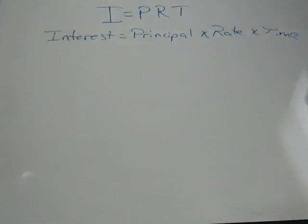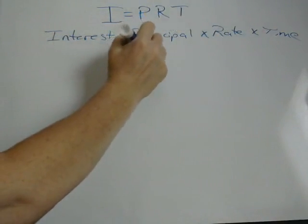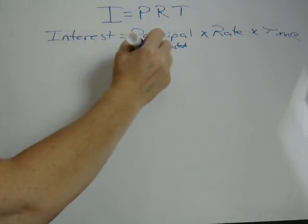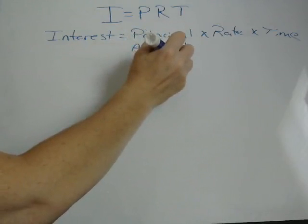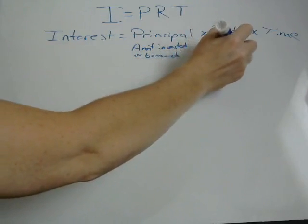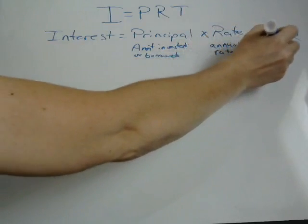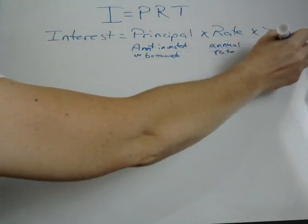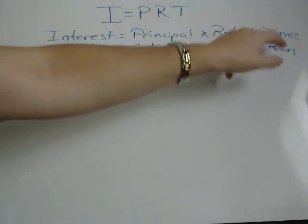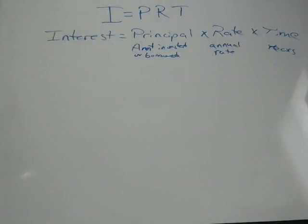The interest is the money that you're either earning or losing if you're borrowing. Principal is the amount invested or borrowed. Rate is the annual rate. Time has to be in years — this is the most important thing to remember, because that's going to be the trick in some of these questions.